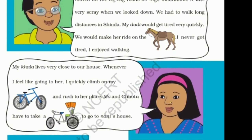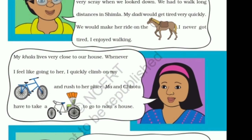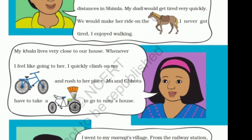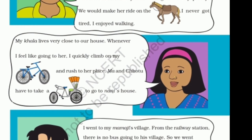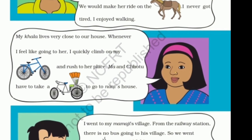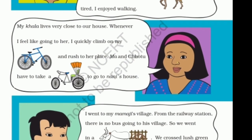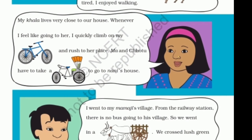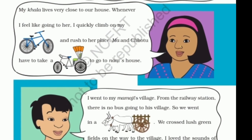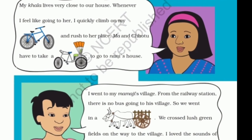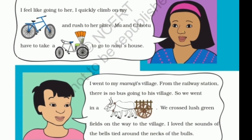Now the girl is saying: My khala lives very close to our house. Whenever I feel like going to her, I quickly climb on my cycle and rush to her place. Another child says: I am going to my mama's village. From the railway station, there is no bus going to his village, so we went in a bull cart. We crossed lush green fields on the way to the village. I love the sounds of the bells tied around the necks of the bulls.